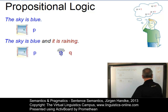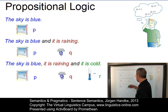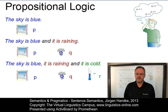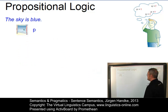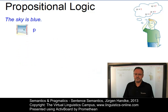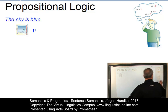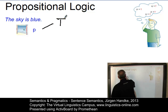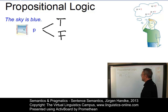P would be 'the sky is blue' and 'it is raining' is Q. And if you have three propositions, like 'the sky is blue', 'it is raining', 'it is cold', you would use P, Q and R, and so on and so forth. Propositions have a truth value. So we could ask the question: under what conditions is this proposition true, where the capital T stands for true, or false, where the capital F stands for false?